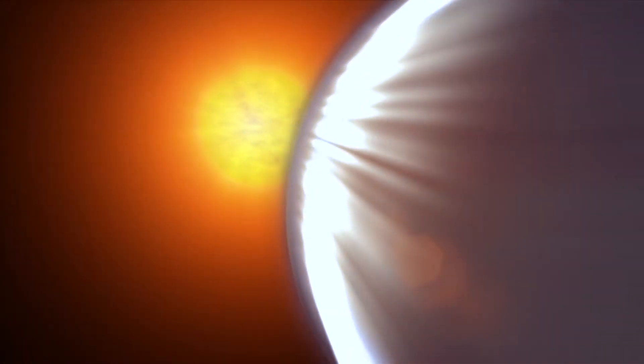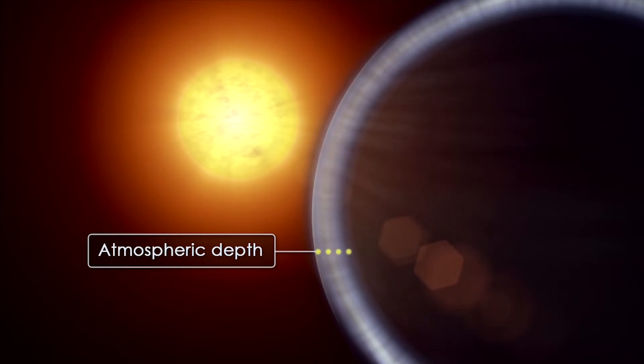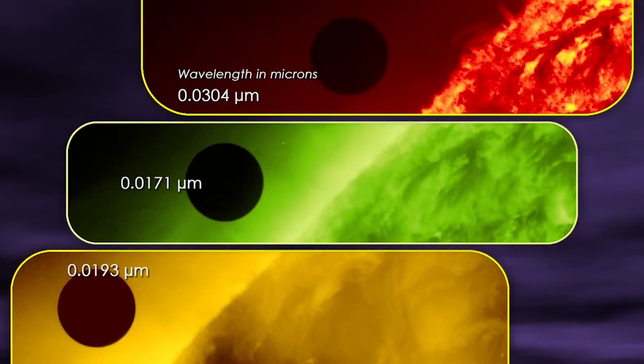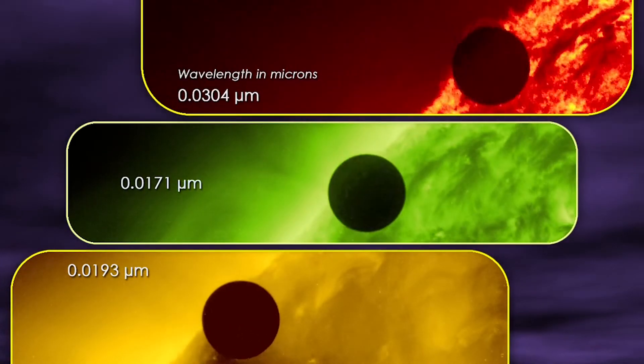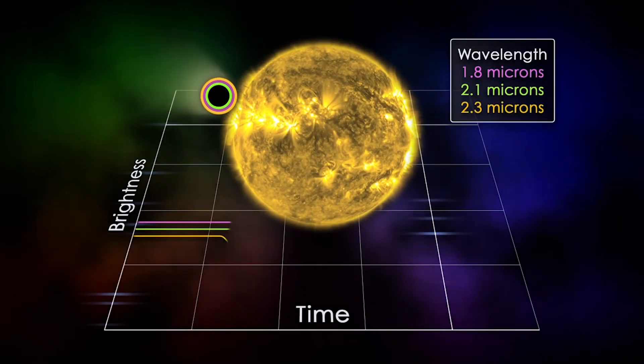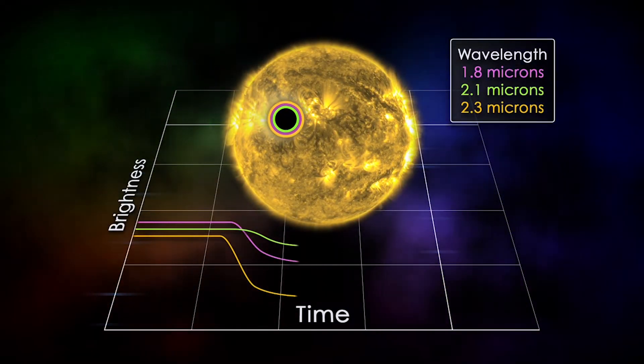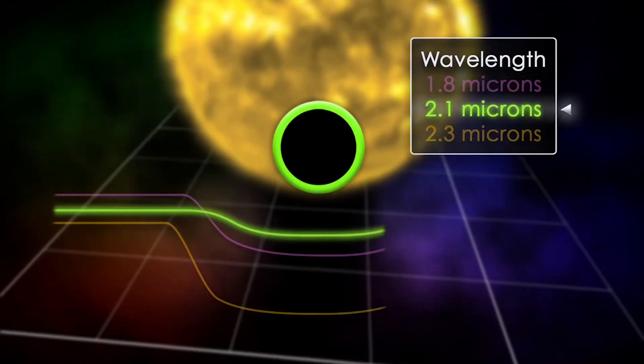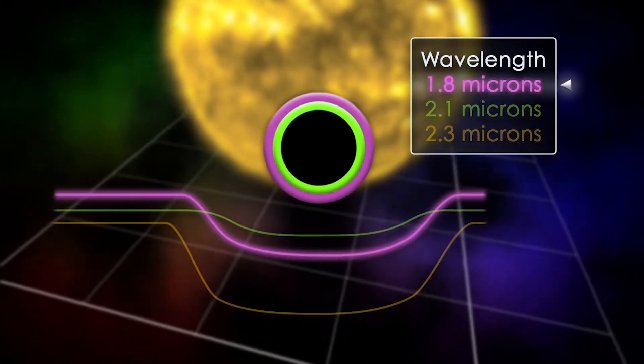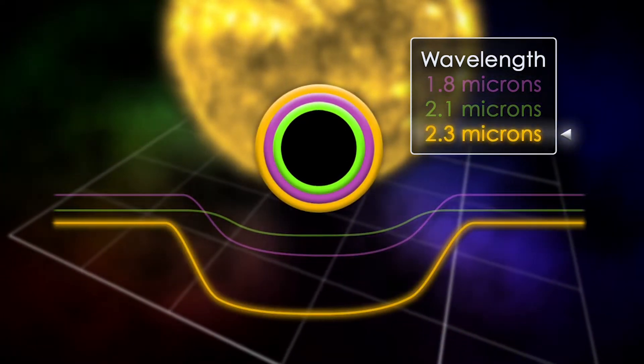Knowing the depth and density of the atmosphere is also important. To figure this out, astronomers observe the transit at many different wavelengths. At wavelengths where more absorption occurs, the planet will appear larger, with the change in size indicating how deeply the atmosphere extends, and its density at different altitudes.